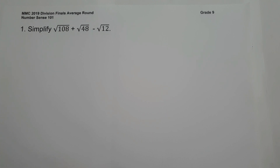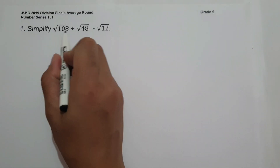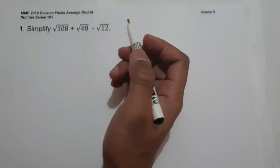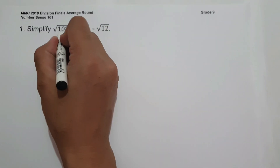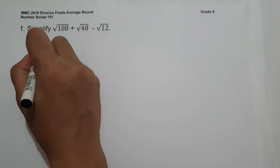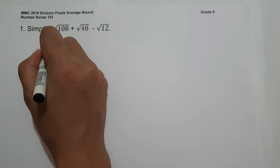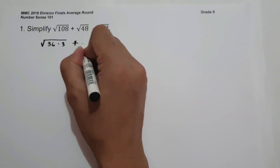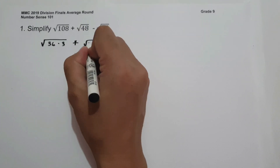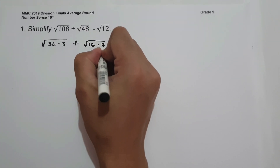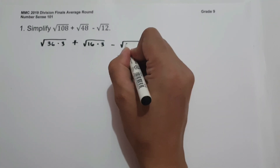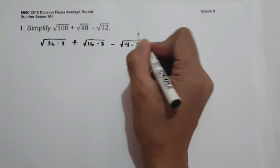To simplify the given expression, let us factor each radicand such that one of the factors is a perfect square. So for 108, the factors are 36 and 3. For square root of 48, that is 16 and 3. And for square root of 12, that is 4 times 3.